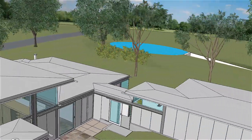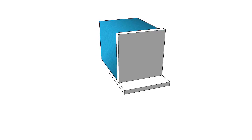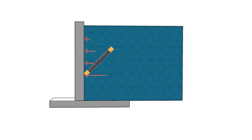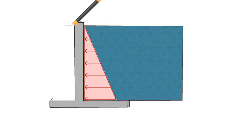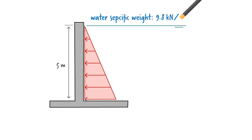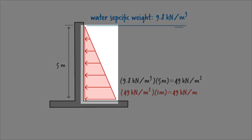Now let us examine the case of the triangular load. Suppose we have a small rectangular concrete dam as part of a residential irrigation system. For analysis purposes, let's consider a 1-meter wide slice of the wall. Water pressure at the base of the wall is a function of the specific weight of water and the height of the wall. The height of the wall is 5 meters. The specific weight of water is 9.8 kN per cubic meter, so the pressure at the base of the wall is 49 kN per meter squared. Since the wall slice is 1 meter wide, the base pressure per slice becomes 49 kN per meter. Given that water pressure at the surface of the reservoir is zero, we end up with a triangular load distribution.